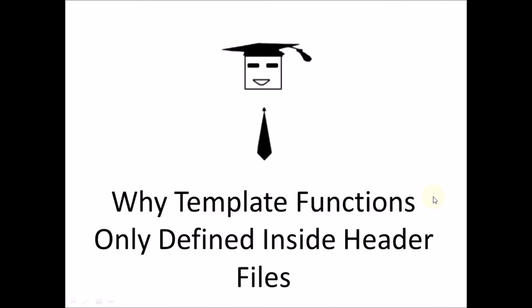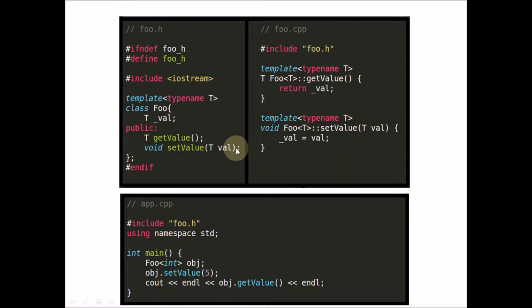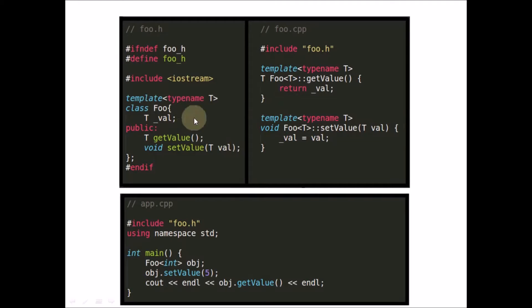Today's question is: why are template functions only defined inside header files? We'll look at the answer now. Traditionally, you write your declaration in the .h file and the definition in the .cpp file. But if it is a template, you cannot do this — we'll see the reason in a moment.